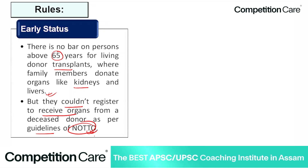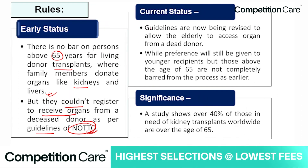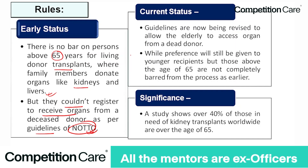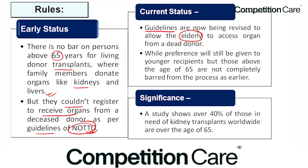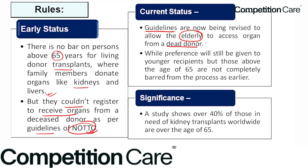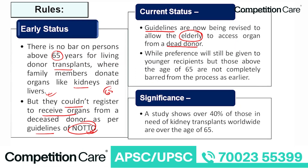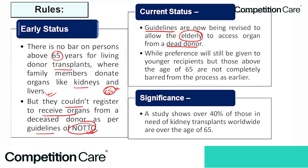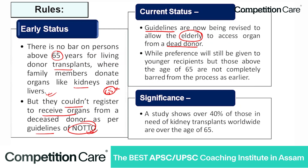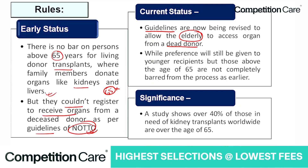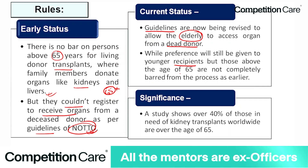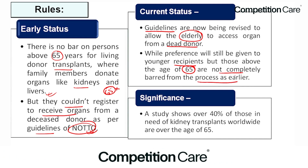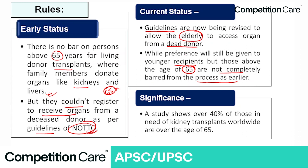The guidelines are now being revised to allow the elderly to access organs from deceased donors. While preference will still be given to younger recipients, those above the age of 65 are no longer completely barred from the process as they were earlier.